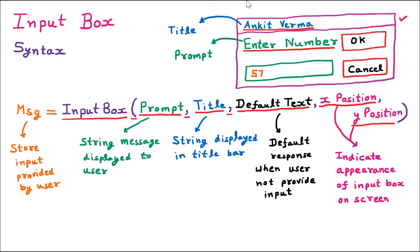The user enters a value — suppose 57 — and presses the OK button. This value 57 is then taken by the MSG variable. The variable can be anything — A, B, C, D, whatever we choose. Now that variable holds the value 57, which we have taken from the user via the input box. This is a pop-up box which appears, and after the user enters the value, it hides.